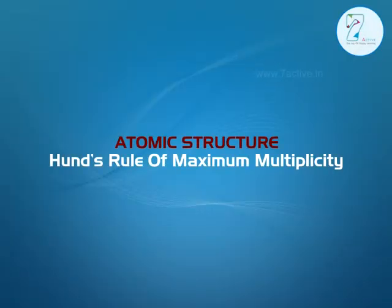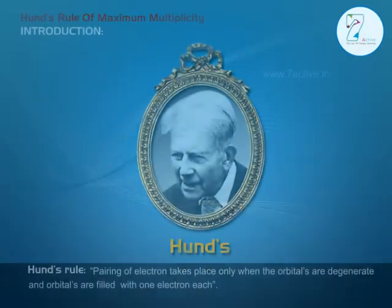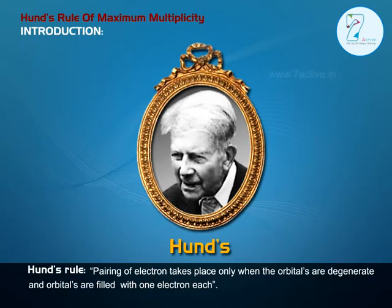Hund's Rule. Statement: Pairing of electrons takes place only when all the available degenerate orbitals in a given subshell are filled with one electron each.